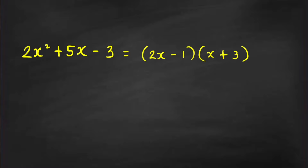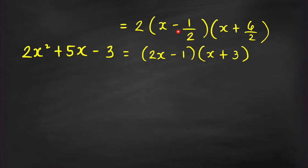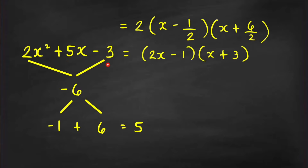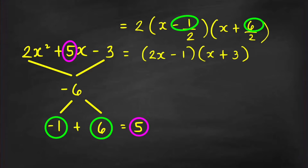With the factoring technique I have in mind, I can easily factor this in two steps. First, I write it as 2 times (x - 1/2) times (x + 6/2), and then get the answer (2x - 1)(x + 3). How did I get these factors? I look at the product of a and c, which is -6, and find two factors of -6 whose sum is 5. That's easy: -1 and +6. The -1 and 6 go in the numerators, and the 2 is the coefficient of x².